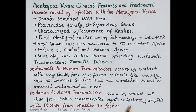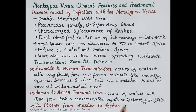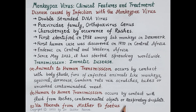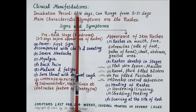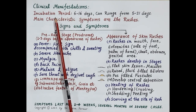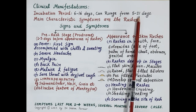Among infected individuals worldwide, several are from the LGBT community — lesbian, gay, bisexual, and transgenders — however it is not clear if this virus can be transmitted sexually. The incubation period of the virus is 6 to 16 days; in few cases it can range from 5 to 21 days.